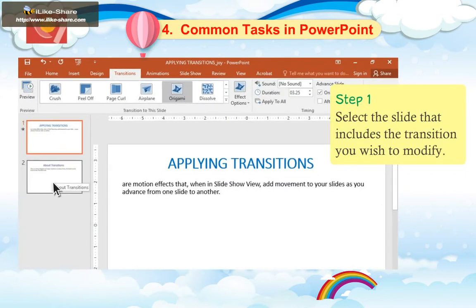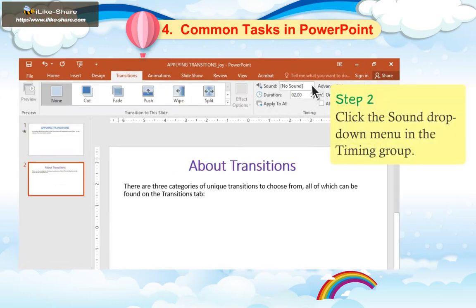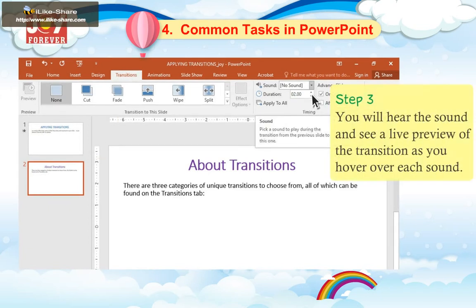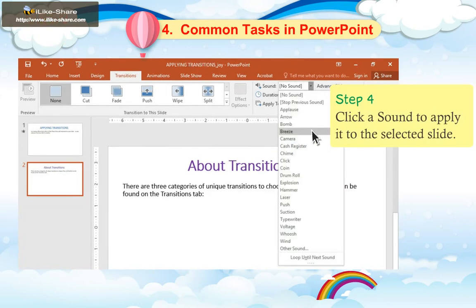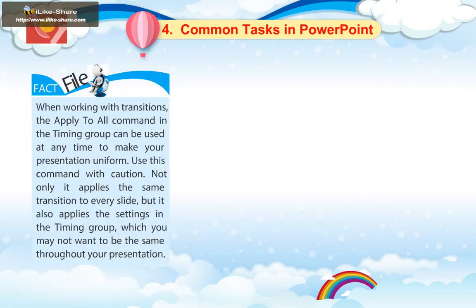To add sound: 1. Select the slide that includes the transition you wish to modify. 2. Click the Sound drop-down menu in the Timing group. 3. You will hear the sound and see a live preview of the transition as you hover over each sound. 4. Click a sound to apply it to the selected slide.